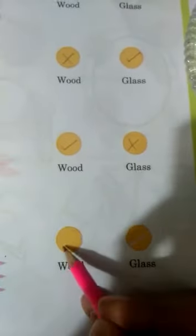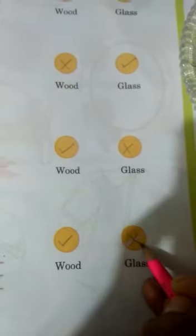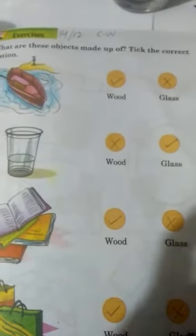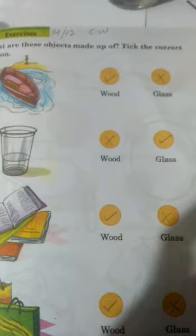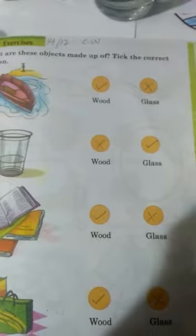Cross this glass, circle, understand? This is your work, KG class. This is your homework, C.W., understand? You can do it like this, Allah hafiz.